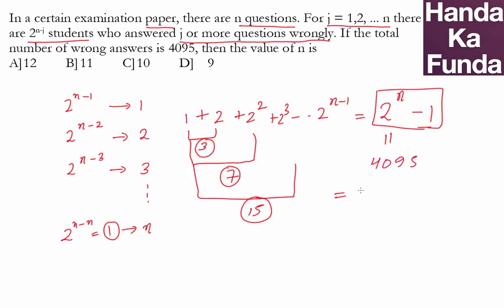And what is 4095? 4095 is 4096 minus 1, or 2 to the power of 12 minus 1, which means the value of n that we are looking for is 12, and that is given to me in option A.